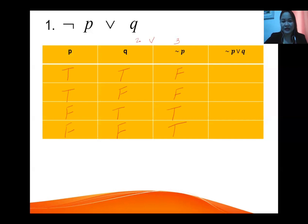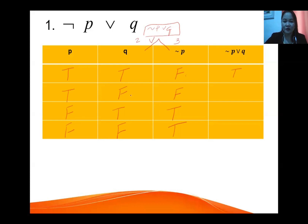So we have negation of p OR q — combine these two columns. First: negation of p is false, using OR: false OR true, therefore true. Then false OR false — remember, with OR, if one is true the entire statement is true; since we have two false values, therefore false.